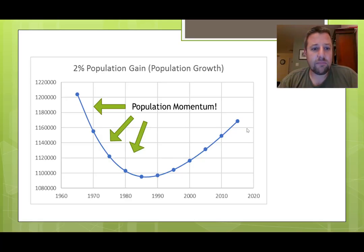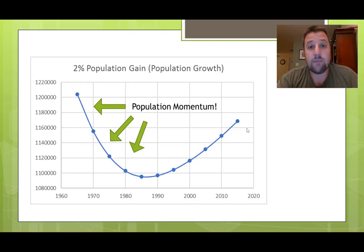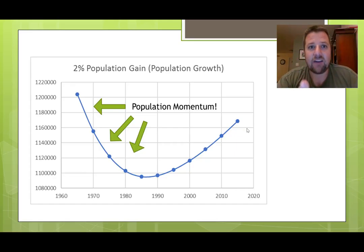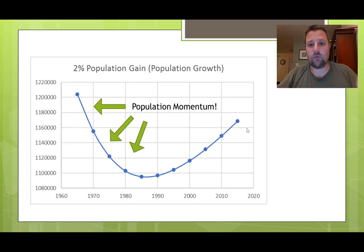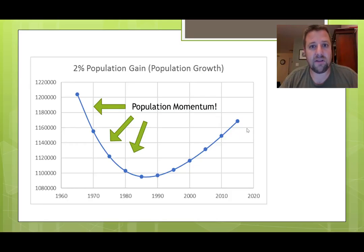This idea of population momentum is pretty important, because for governments that want to manipulate their population size, any policy they implement takes decades to show effects. China implemented a one-child policy for many years, stating each family can only have one child. That kind of works to an extent, but it takes maybe decades to see the effects, because you already have 100 years worth of people in different age groups getting older. So when a government policymaker looks at population over time, they keep this population momentum idea in mind.